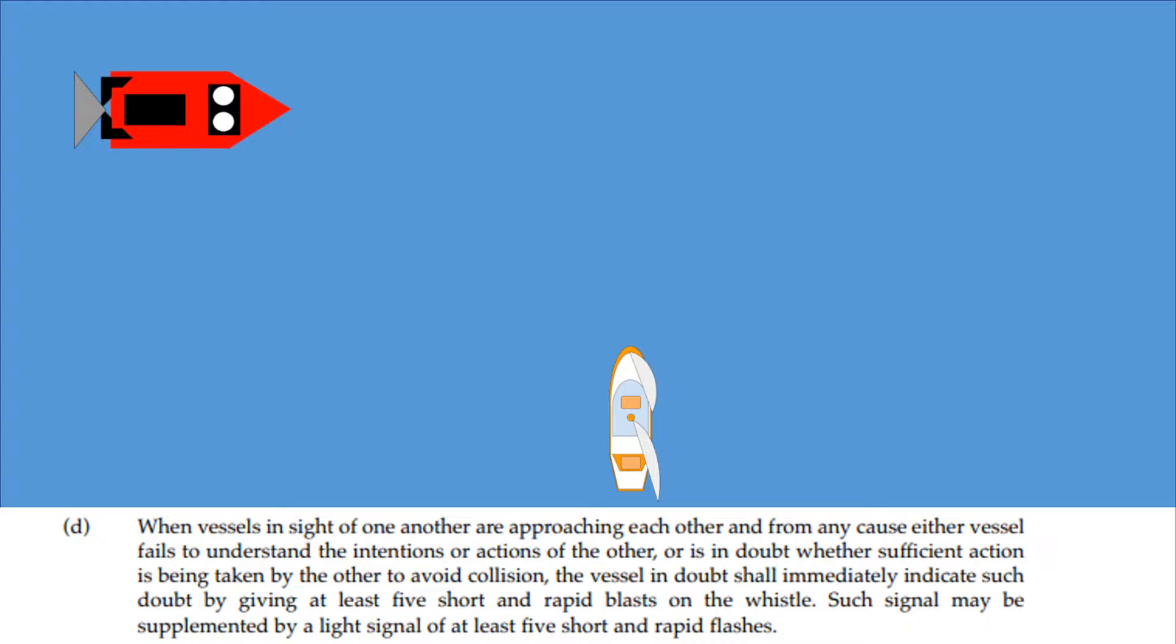So in this example we have a crossing situation between a fishing boat and a sailing boat. No matter what side the sailing boat is approaching the fishing vessel, the sailboat is the give-way vessel. The fishing vessel engaged in fishing is the stand-on vessel.